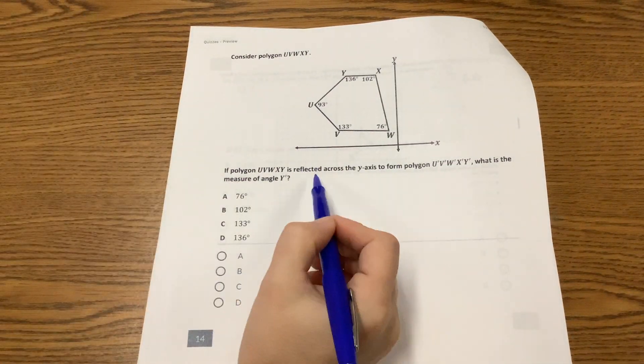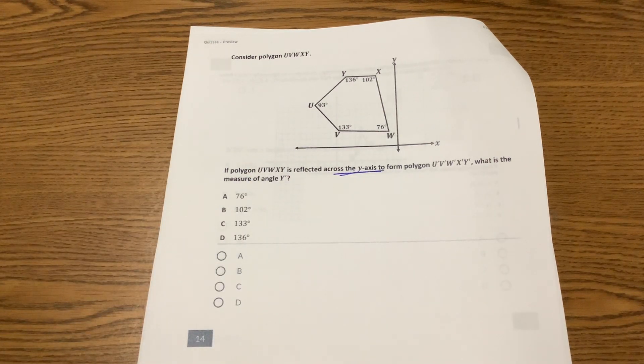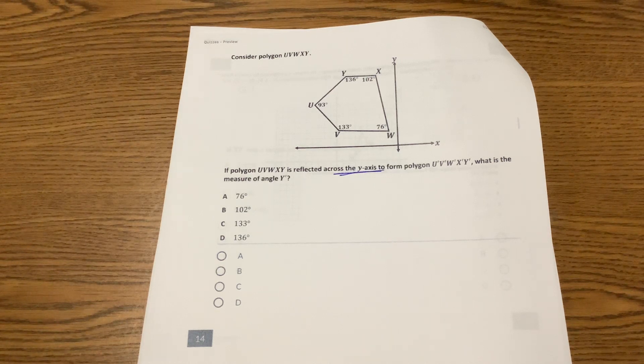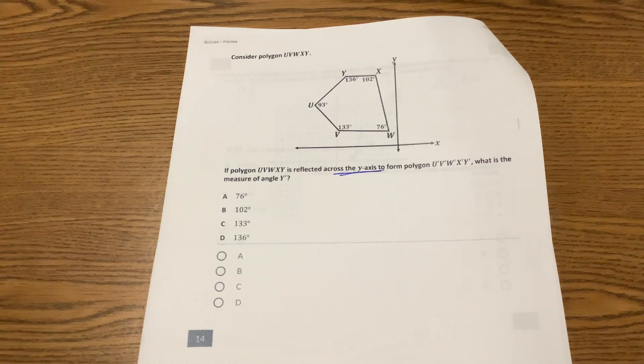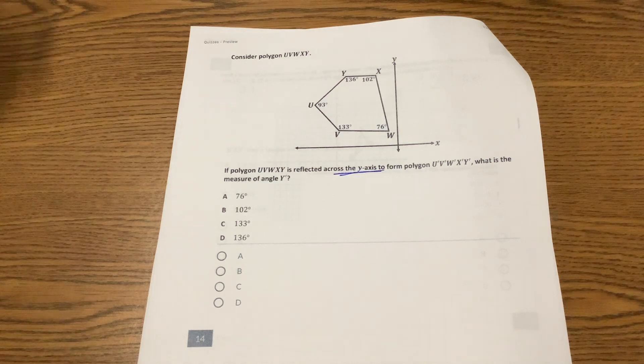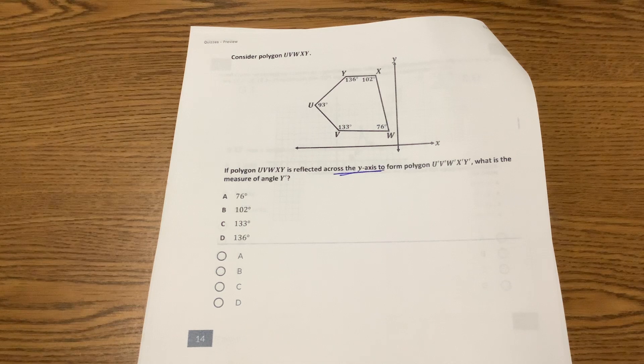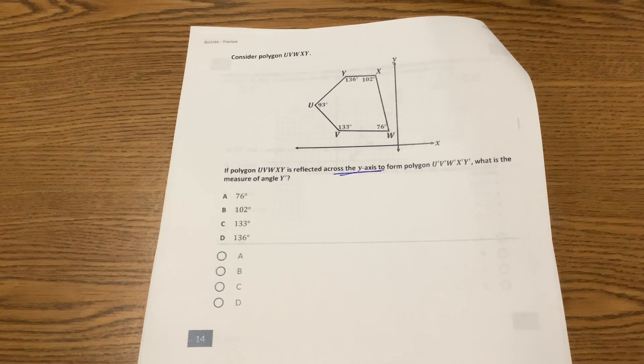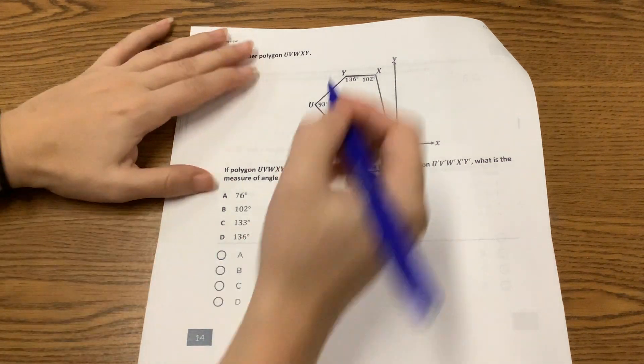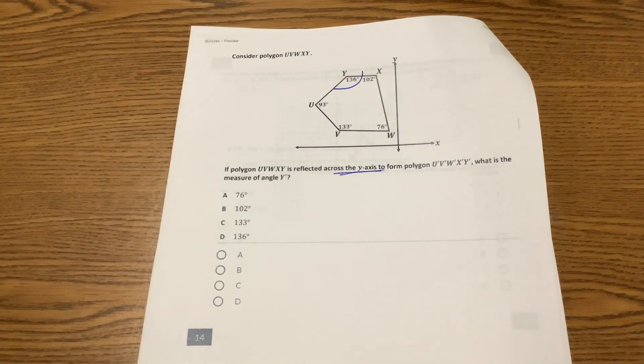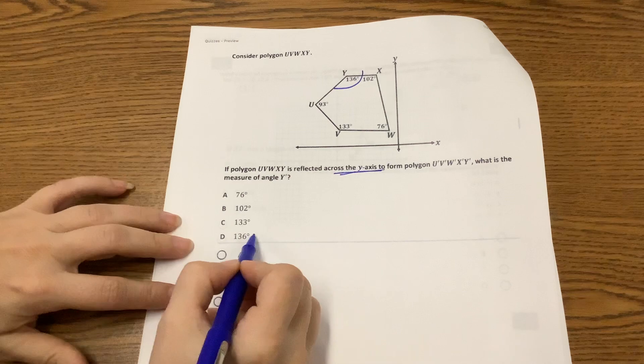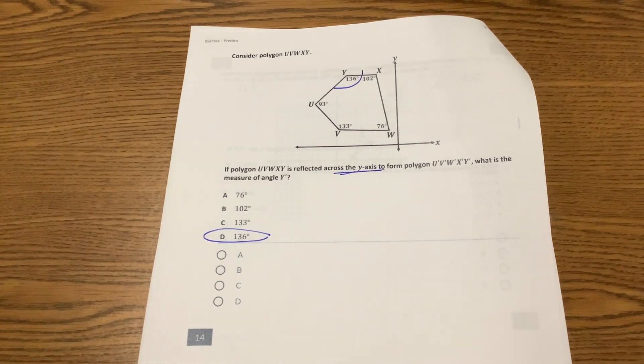Go and find this part. Make sure it's the one that says it was reflected across the y-axis. So they are asking us about an angle measure. If we do a reflection, do reflections change any of these sizes or the angles? With reflections, everything stays preserved, everything's congruent. So if we are talking about polygon UVWXY, then whenever we reflect it, those corresponding angles are still the same. So what is angle y? 136. So what is the angle of y prime? It's also 136.